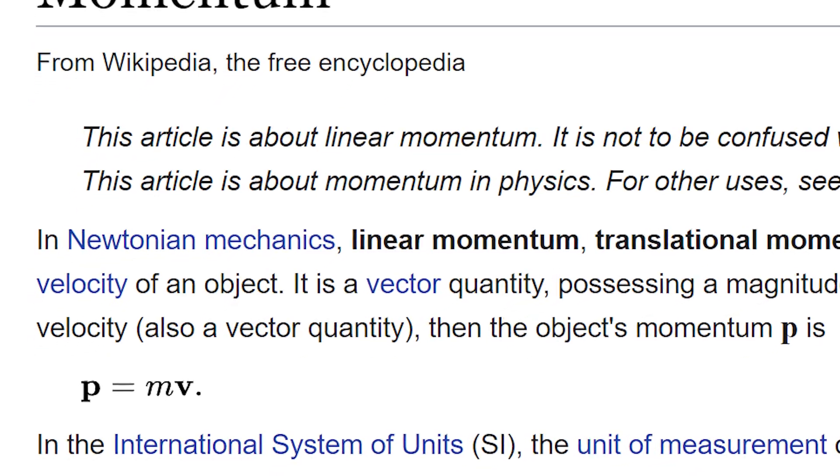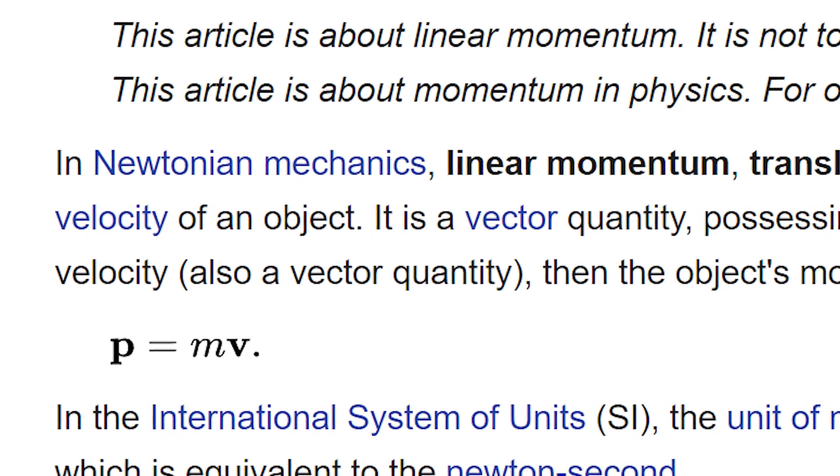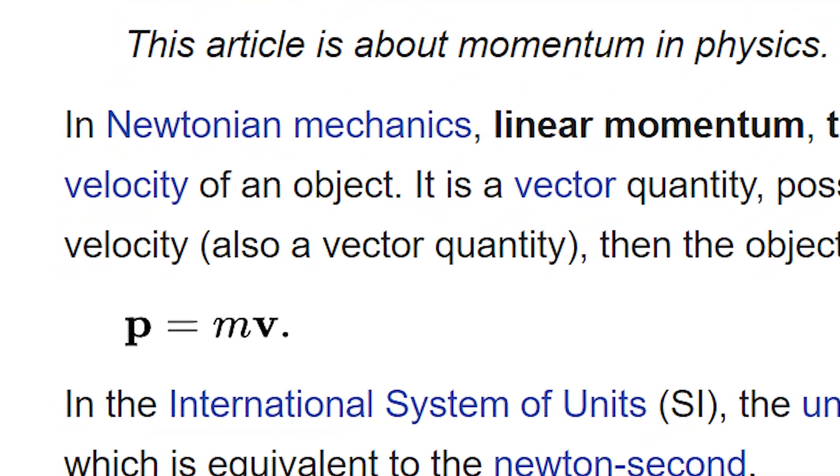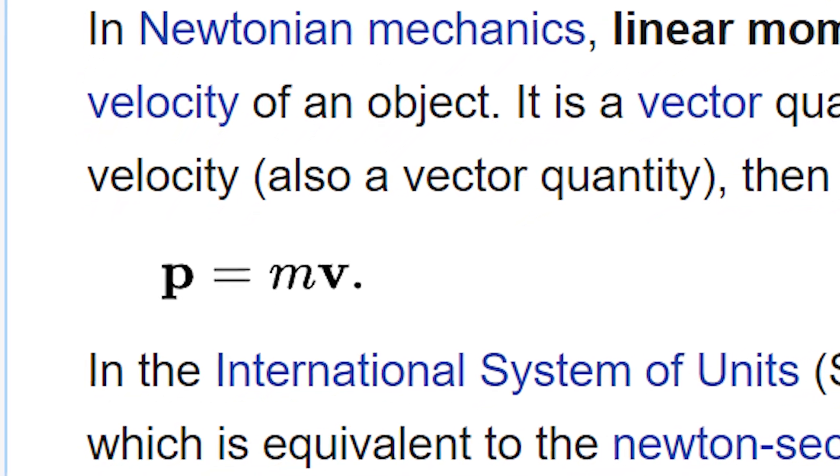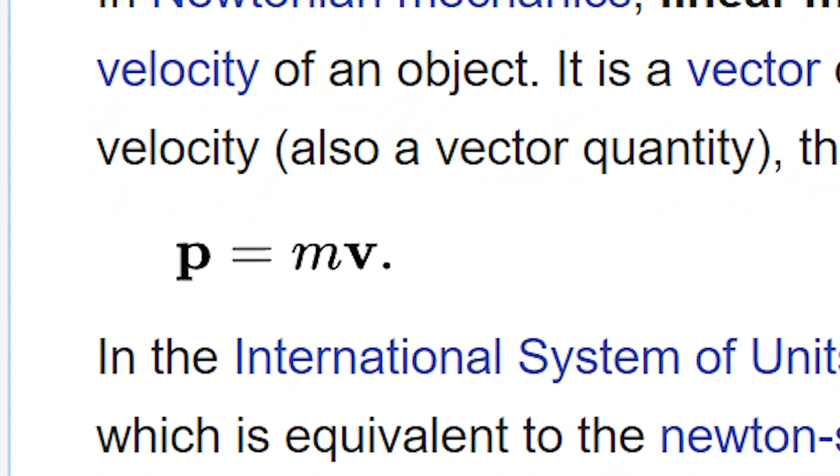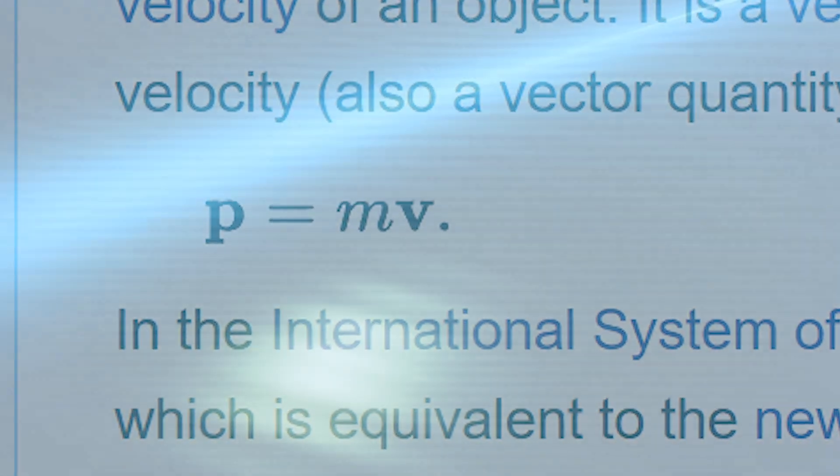During introductory physics, everyone learns momentum equals the product of mass and velocity. If light has zero mass, then whatever the velocity, that multiplied by zero should result in zero momentum. Mass times velocity is one way to calculate momentum,